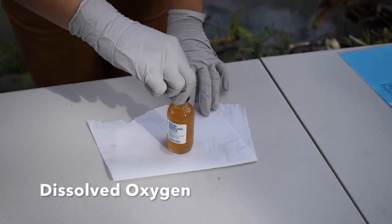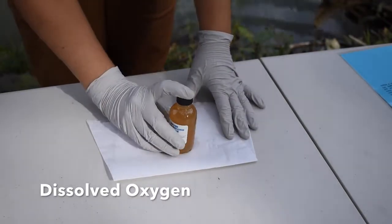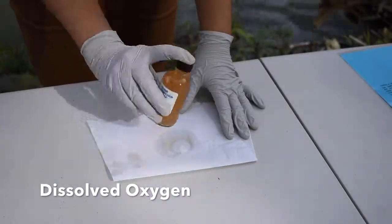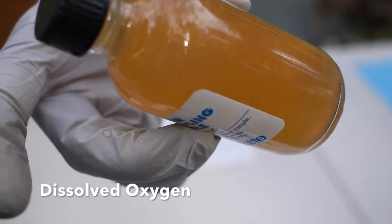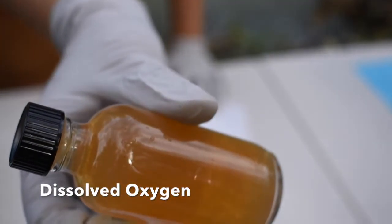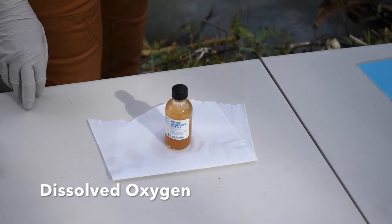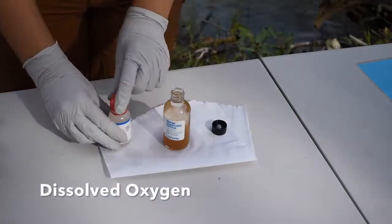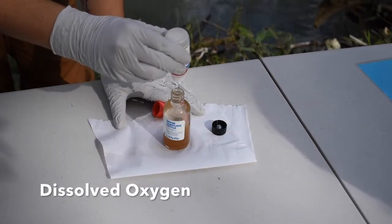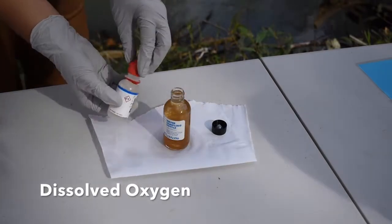Then, we will close the bottle and invert it to mix the contents. You can see a cloudy solid has formed in the bottle, also called a precipitate. After allowing the precipitate to settle below the neck of the bottle, we will open the sample bottle and add 8 drops of chemical number 3, sulfuric acid.